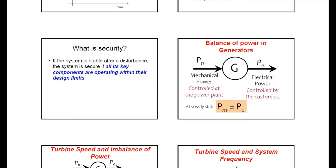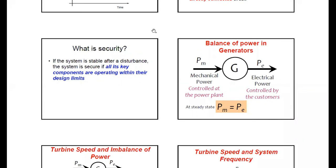Regarding balance of power in generators: mechanical input power (Pm) is given to the generator, and electrical power (Pe) is the output. Mechanical power is controlled at the power plant, whereas electrical power generated is controlled by customers or load. Under equilibrium or steady state conditions, mechanical power equals electrical power — that is, power input equals power output. This is the balance of power in the generator.